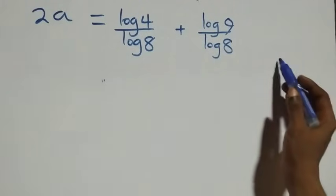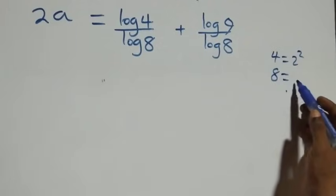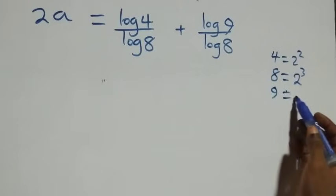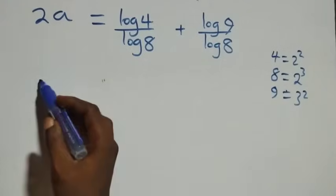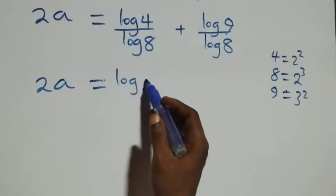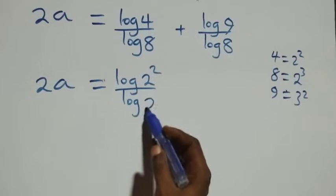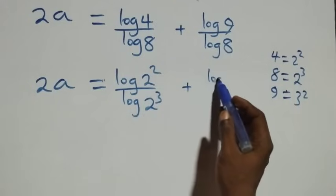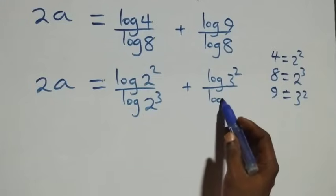From here we can write 4 as 2 times 2, which is 2 squared; also 8 as 2 times 2 times 2, which is 2 raised to power 3; then 9 as 3 times 3, which is 3 squared. So what we have becomes 2a equals log 2 squared over log 2 raised to power 3, plus log 3 squared over log 2 raised to power 3.